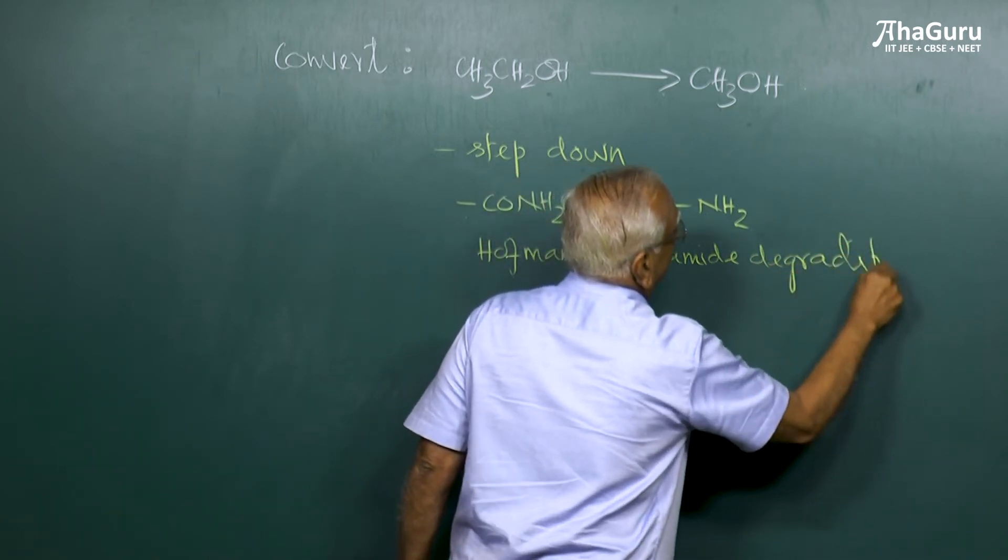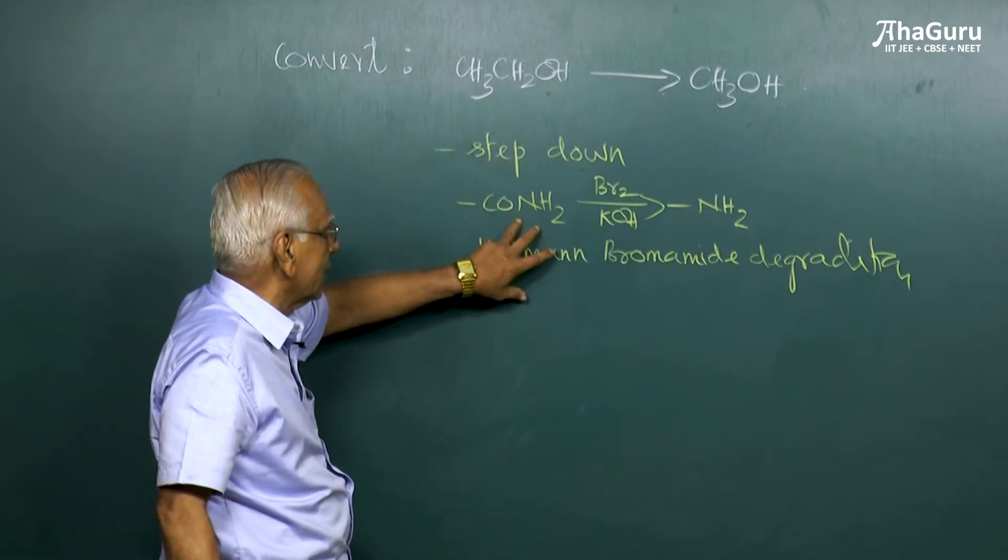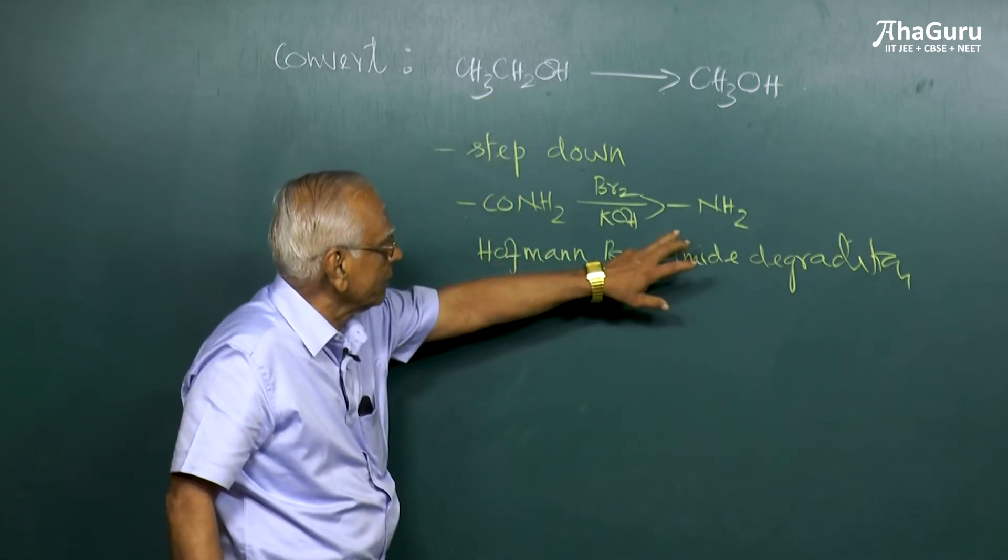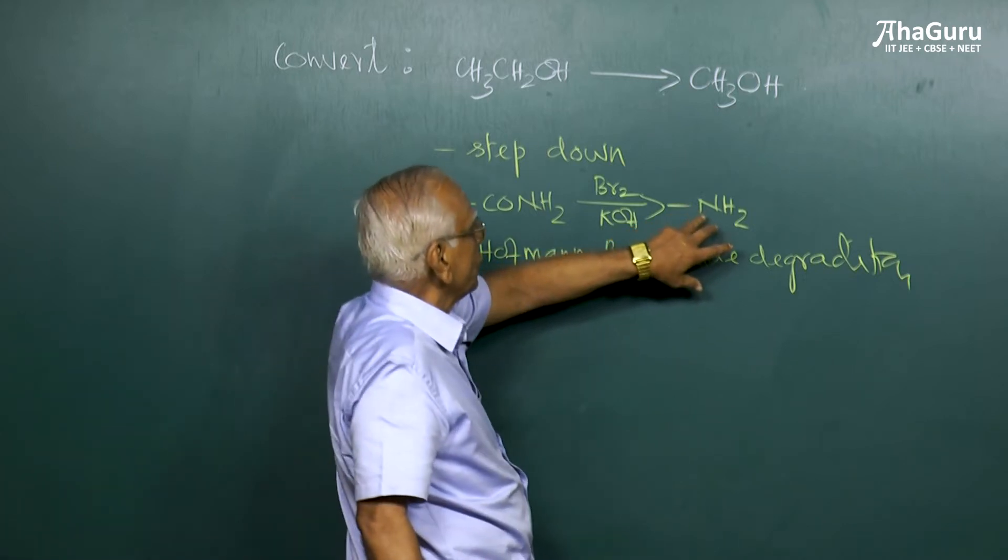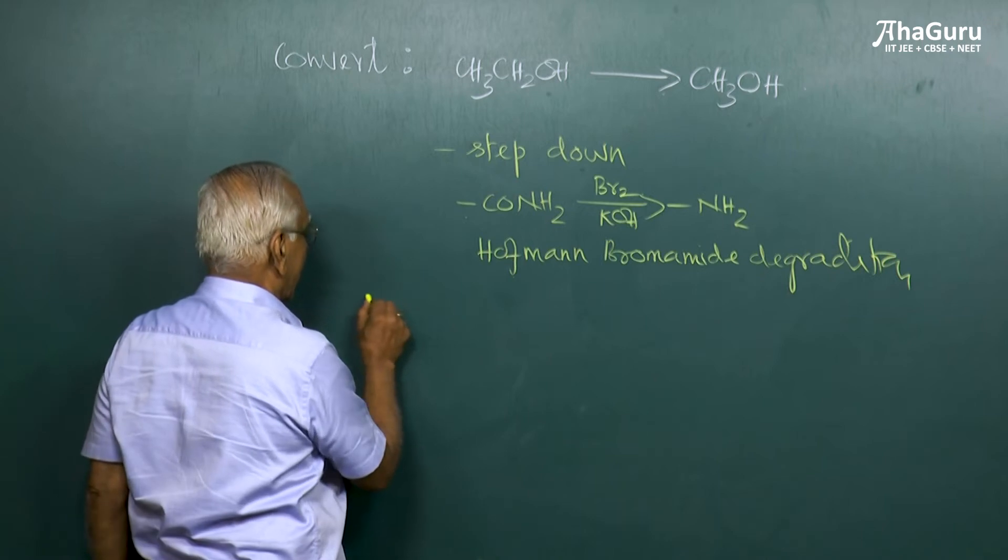Now we have to convert this ethanol to this amide and then remove one carbon atom, and you know how to convert your amino group to OH group. So we shall see the sequence of this particular reaction.